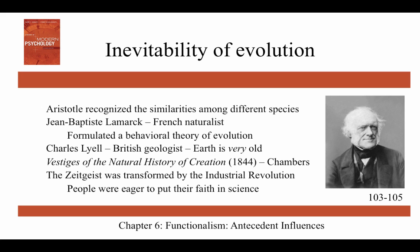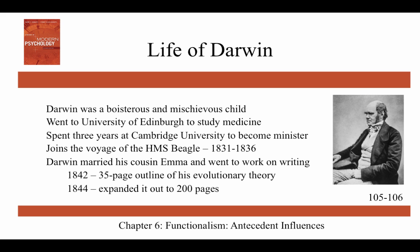Charles Lyell, a friend of Darwin's and a British geologist, came up with the idea that the Earth is actually very old. In his book Principles of Geology, he coined the terms we still use for geologic eras, like Paleozoic and Mesozoic. The book Vestiges of the Natural History of Creation, published in 1844, was originally published anonymously and later turned out to be written by Robert Chambers, a Scottish journalist. Darwin believed this bestseller on the transmutation of species prepared the public for his own theory of evolution based on natural selection. The zeitgeist was transformed by the Industrial Revolution, and society was ready for Darwin's theory.